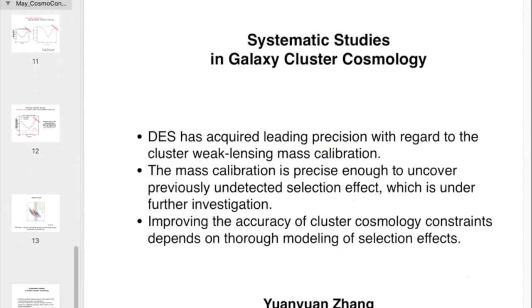So to summarize, DES has acquired leading precision with regard to measuring galaxy cluster observables, especially the cluster weak lensing mass calibration observables. The mass calibration is precise enough to uncover previously undetected selection effects, and we are currently further investigating what these selection effects could be and how much biases they produce. And future cluster cosmology analysis needs to have a better modeling of selection effects. That's all. Thank you.